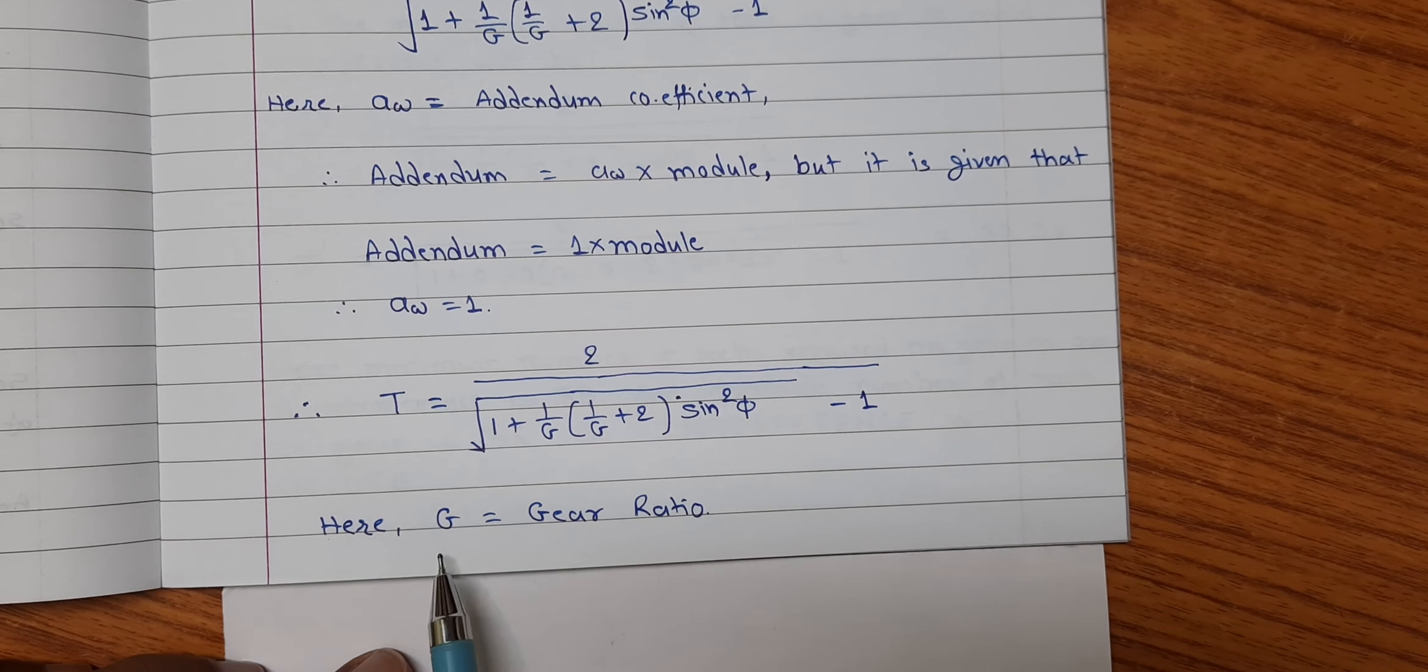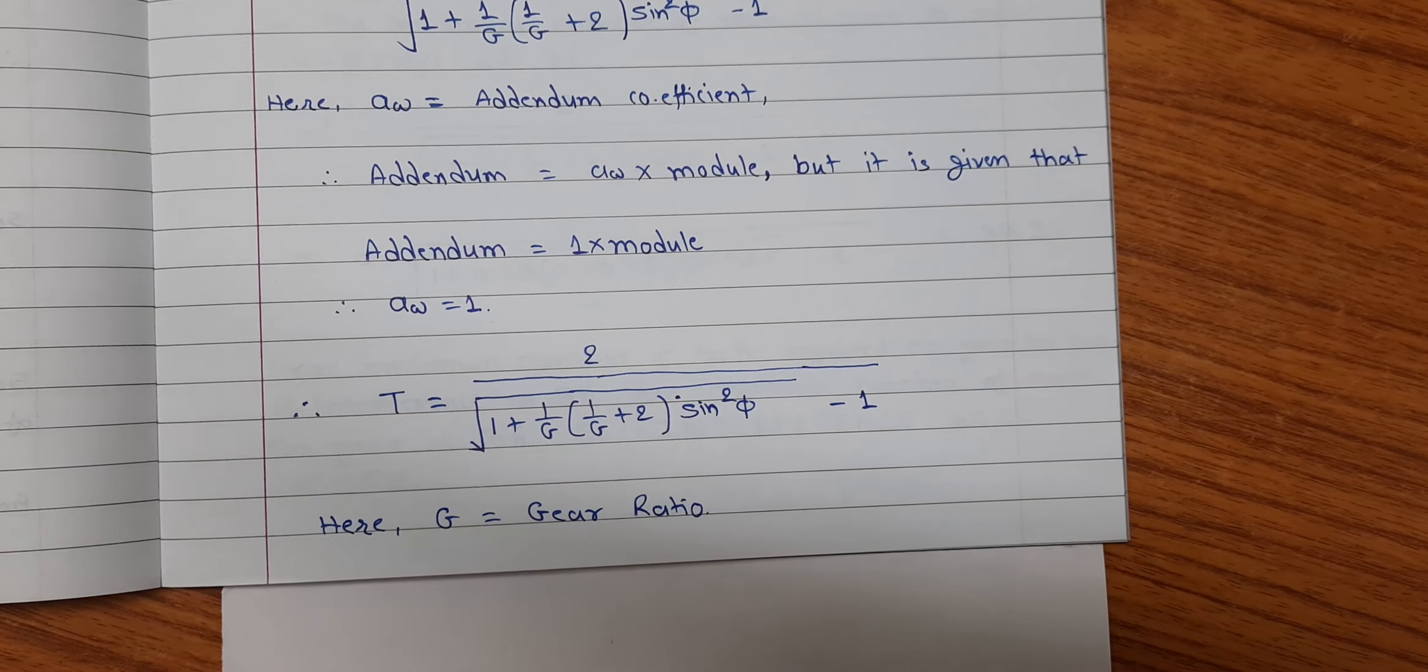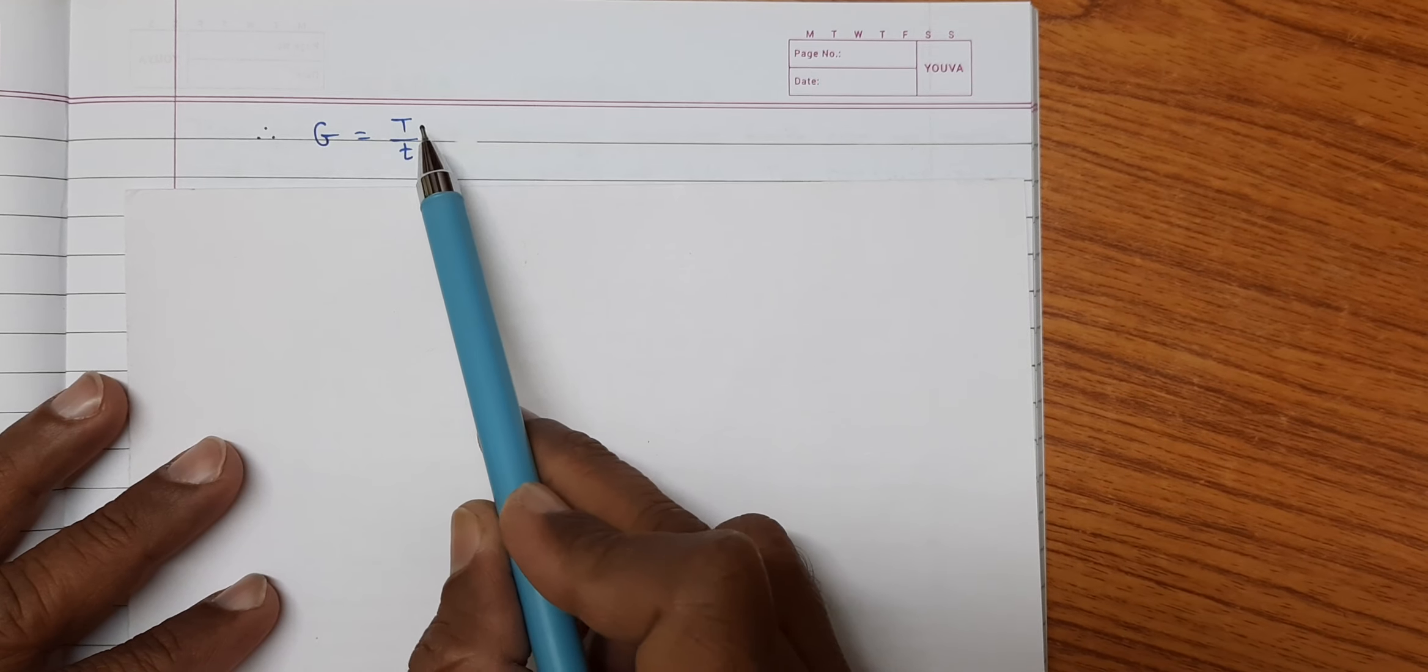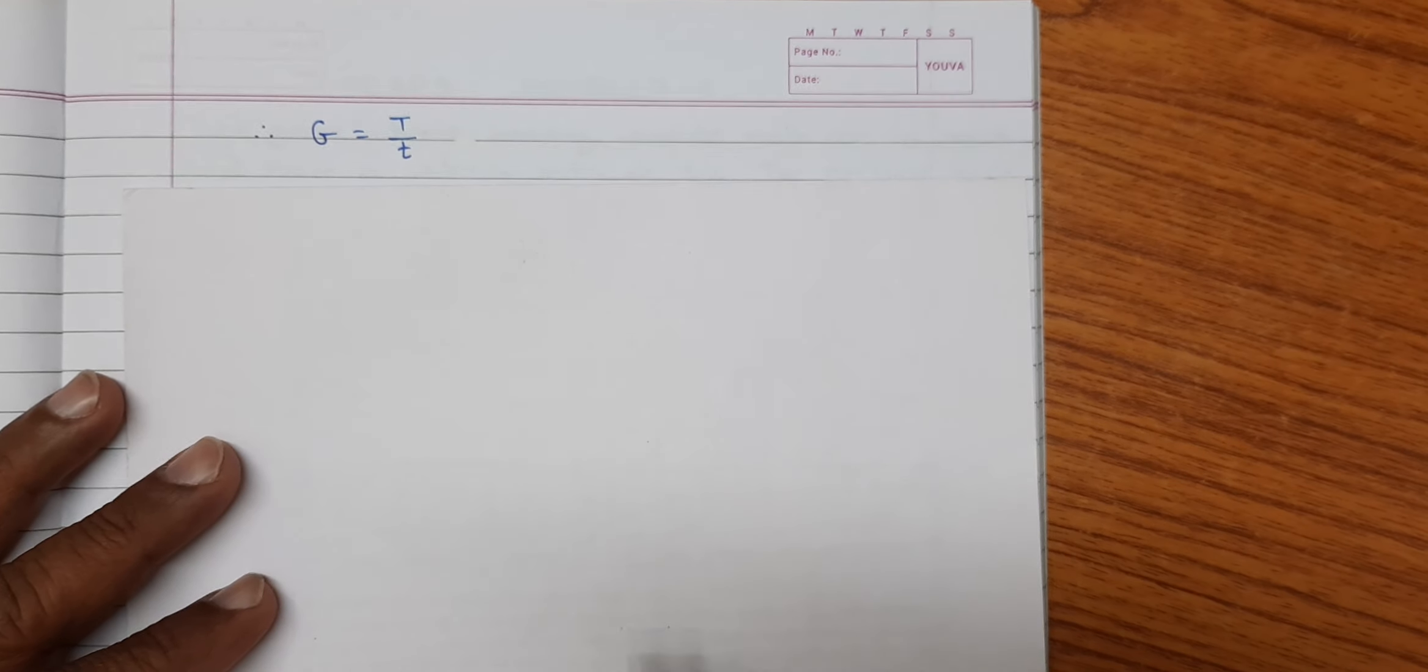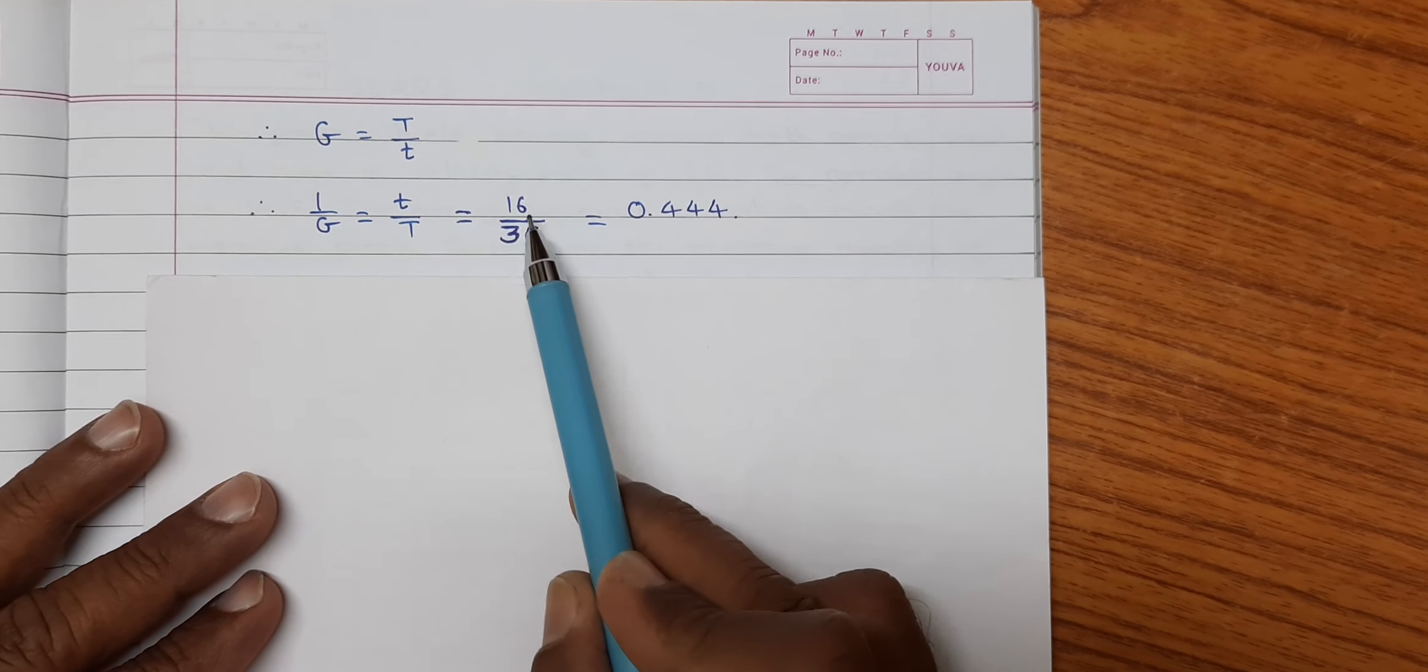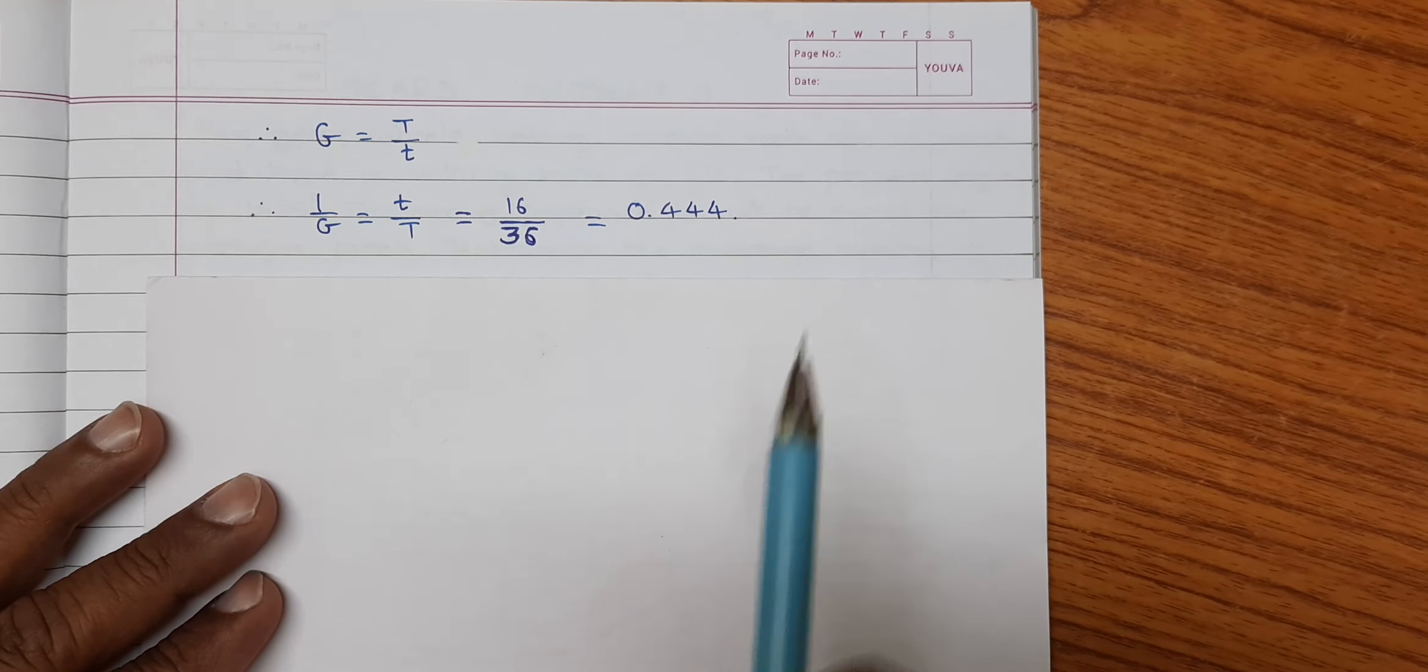Where g is nothing but the gear ratio. Gear ratio is given by number of teeth of gear to the number of teeth of pinion. So, 1 upon g will be small t upon capital T. That is 16 upon 36 gives 0.444.